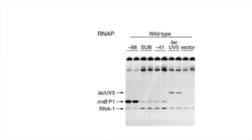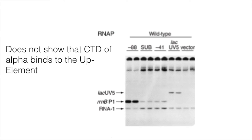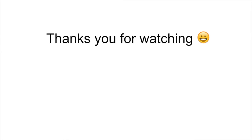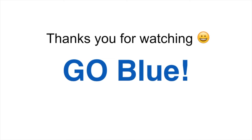This is a compelling experiment, but it does have limitations. Because this is a transcription assay, we can't directly say that the C-terminal domain of alpha is physically binding to the UP element. What we can say is that when we have an UP element and when we have the C-terminal domain of alpha, we see increased levels of transcription. Thank you for watching — I hope this video helped you understand how transcription assays work, how to read gels of transcription assays, and how the UP element interacts with the C-terminal domain of alpha. Go blue!